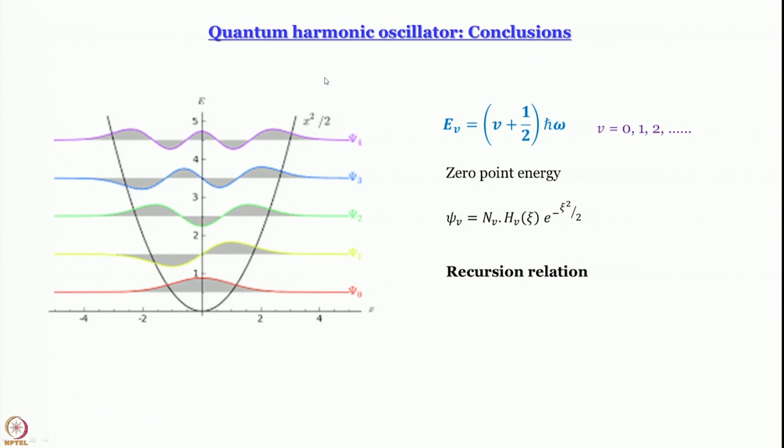Then we have learned that a recursion relation is there connecting these wave functions. Just multiply a wave function by xi, you will be able to get a linear combination of the wave function before and wave function after. That is all for simple harmonic oscillator. This, as we said earlier, has a very profound application in vibrational spectroscopy.